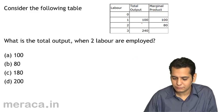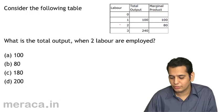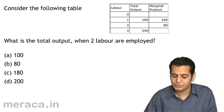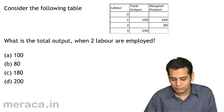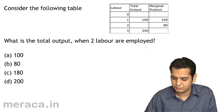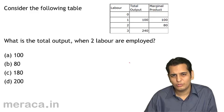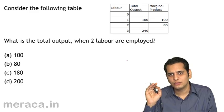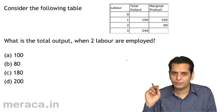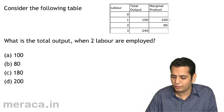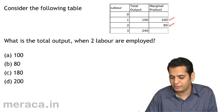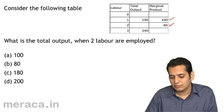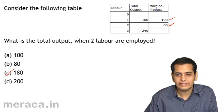Consider the following table where labour, total output, and marginal product are given. What is the total output when two labourers are employed? Remember that total output equals the sum of all marginal products. Marginal product when the first labour is employed is 100, and when the second labour is employed is 80. So total product when two labourers are employed is 100 plus 80, that is 180.